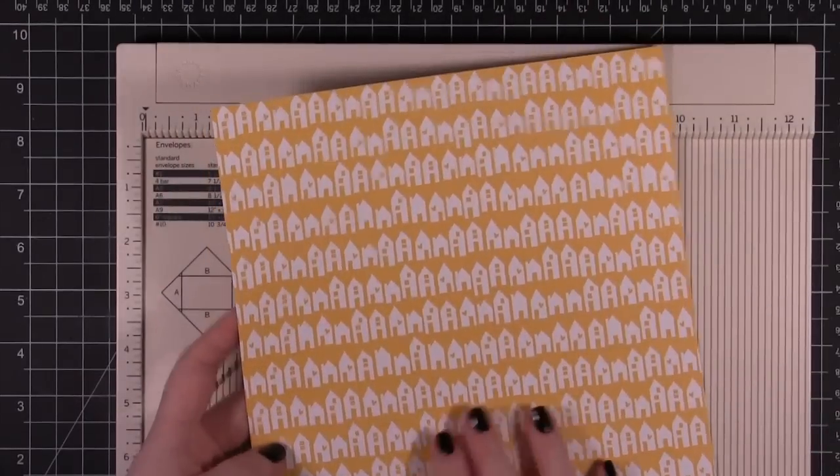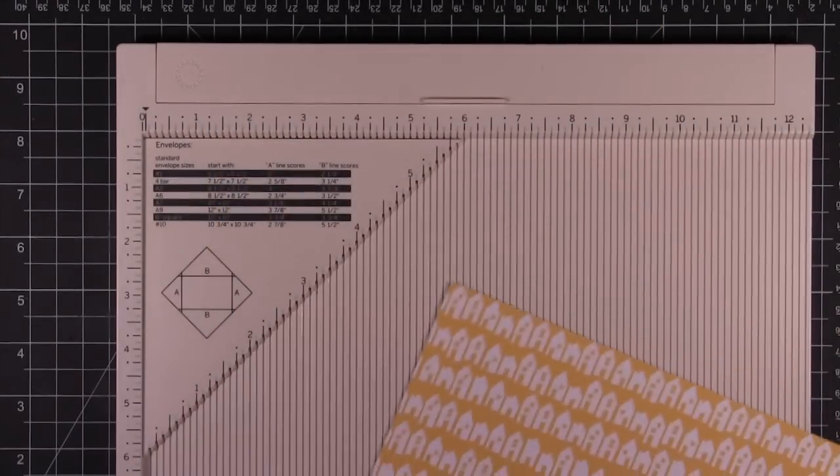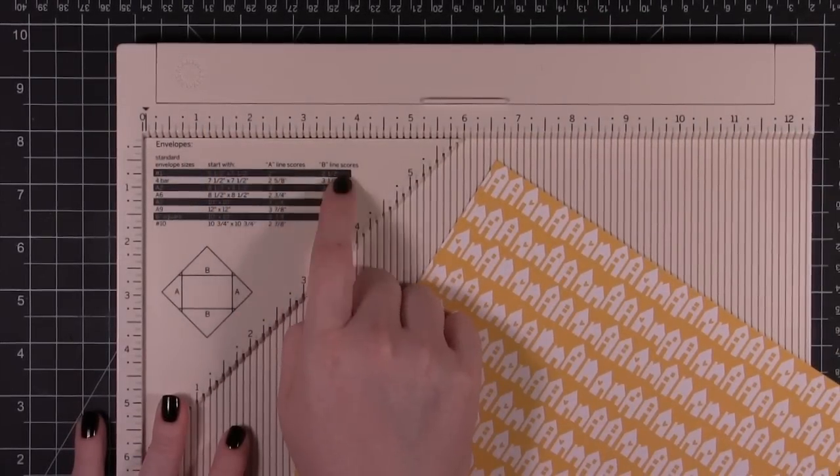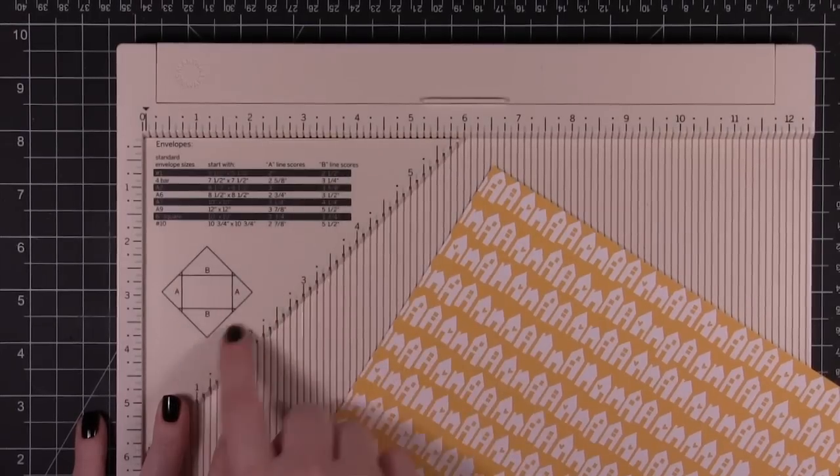I've cut some pattern paper here, some really cute American Crafts paper. That also gives you A square lines and B square lines.